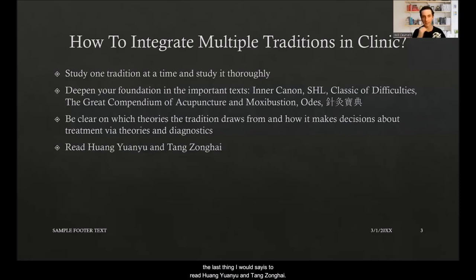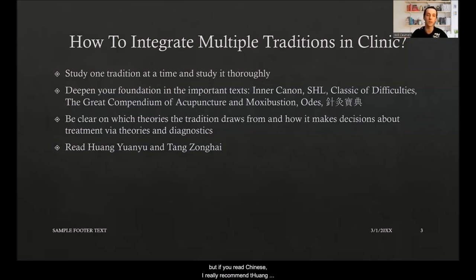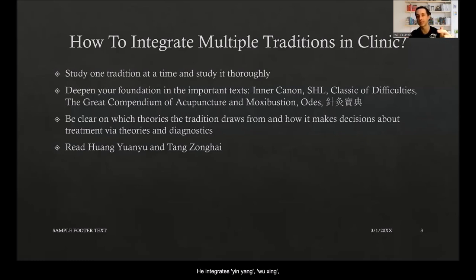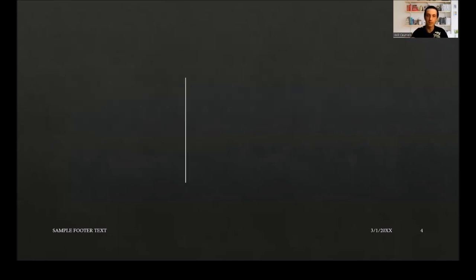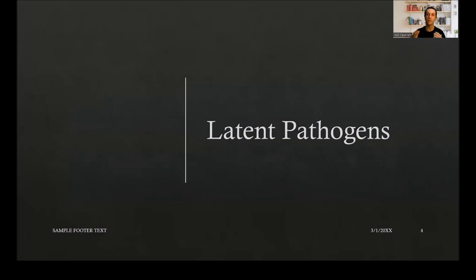The last recommendation is to read Huang Yuan and Tong Zonghai. Unfortunately they aren't really available in English, but if you read Chinese I strongly recommend them. Huang Yuan integrates yin-yang, wu xing, the six conformations, and the twelve channels into one system, so having his theoretical framework in mind makes it much easier to move between different traditions.